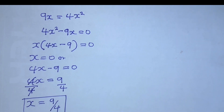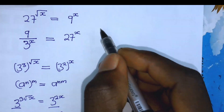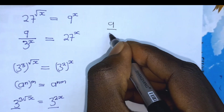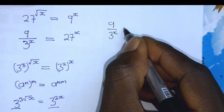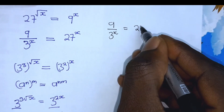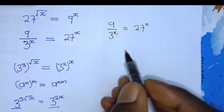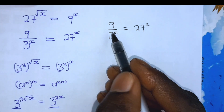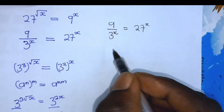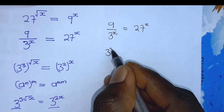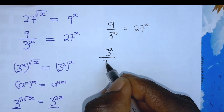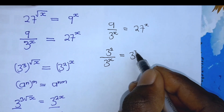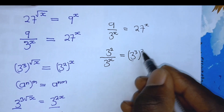The second question is 9 divided by 3 to the power of x, which is equal to 27 to the power of x. Let's consider the left-hand side and write it as an index: 3 to the power of 2 all over 3 to the power of x, which is equal to 3 to the power of 3x.